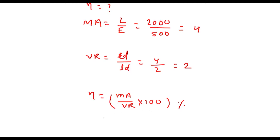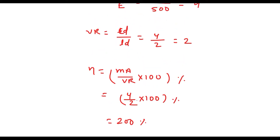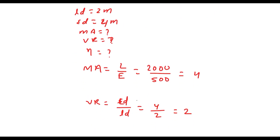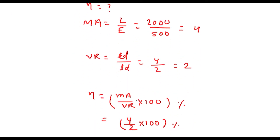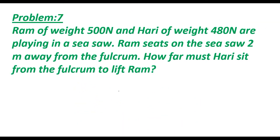Efficiency is always calculated in percent. MA is 4, VR is 2, into 100. So it becomes 4 divided by 2 into 100, which gives 200 percent. This is the required efficiency. So for this simple machine: mechanical advantage = 4, velocity ratio = 2, efficiency = 200%.